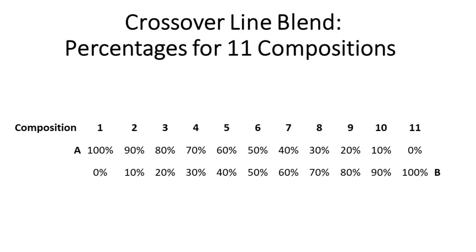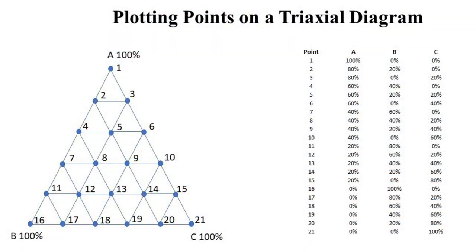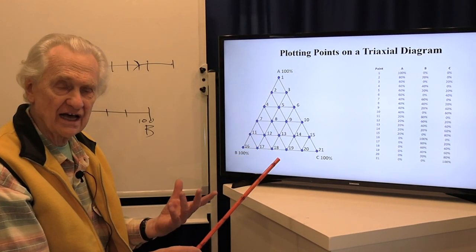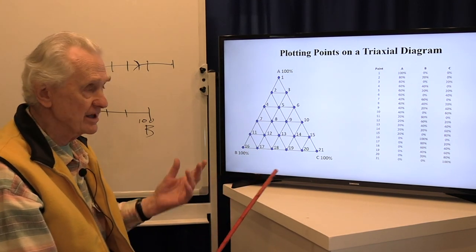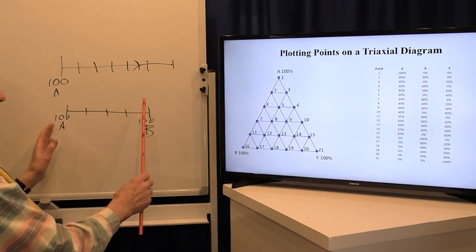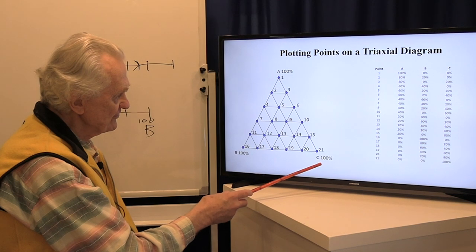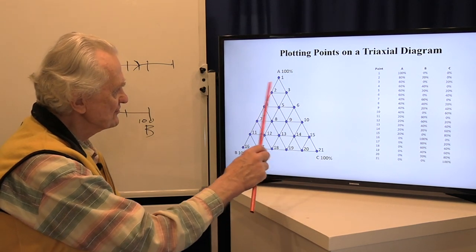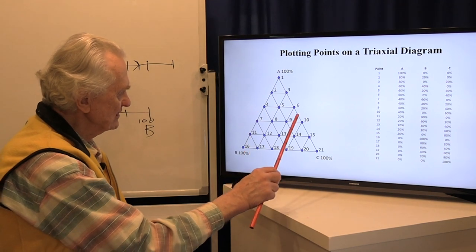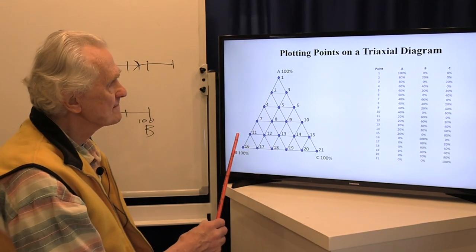That covers two components. Now moving to three ingredients, we use what's called the triaxial diagram. By drawing a triangle instead of a line, we can show all possible combinations of three ingredients. The corners represent 100%: this corner is 100% A, this is 100% B, and this is 100% C. We can make any number of gradations we want — just a few divisions along the outside, or many more, depending on how many samples we want to make.